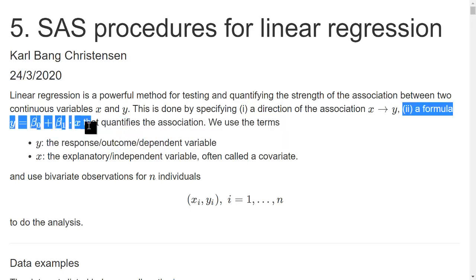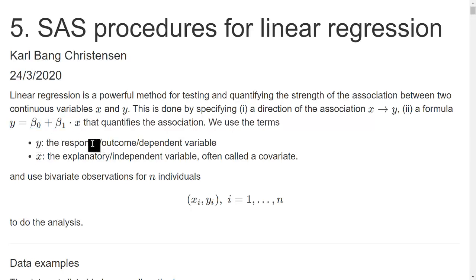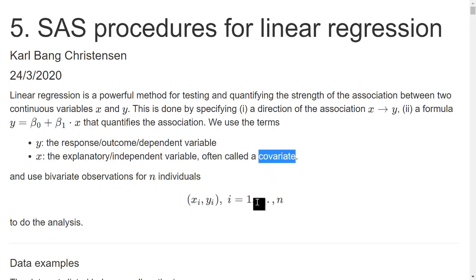We formulate this linear relationship: y and x can be depicted using a straight line. y is called the response variable, outcome variable, or dependent variable, and x is called an explanatory variable, independent variable, or covariate. We use bivariate observations for n individuals. In the example of obesity score and blood pressure, x is the obesity score and y is the blood pressure, so we quantify how much differences in obesity score are expected to cause differences in blood pressure.